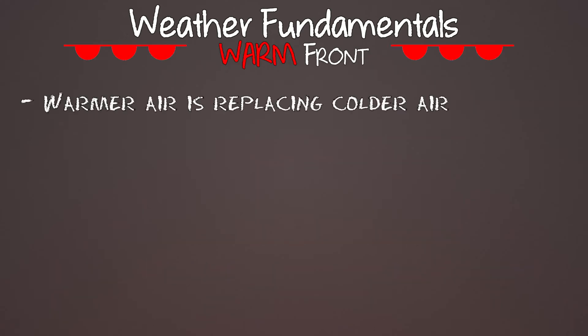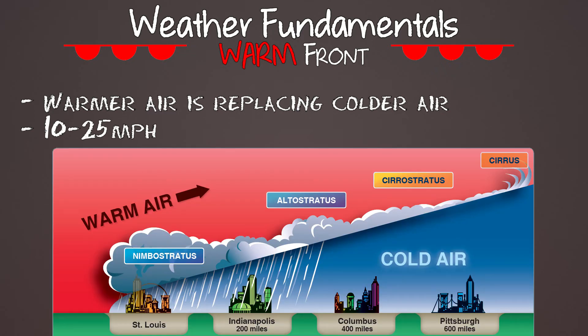In a warm front, warm air advances and replaces the colder air. Warm fronts are typically slow-moving at about 10 to 25 miles per hour. The warm air slides on top of the cold air, creating a slope, and eventually pushes the cold air out. If that warm air has a lot of moisture, as it gets lifted the temperature drops, you get condensation and precipitation. You can tell a warm front is coming if you see cirrus or stratus clouds, and sometimes fog. As the front approaches, you'll see stratus clouds and possible drizzle. Visibility is typically poor, but improves as the front passes, though it might be hazy for a bit afterward.